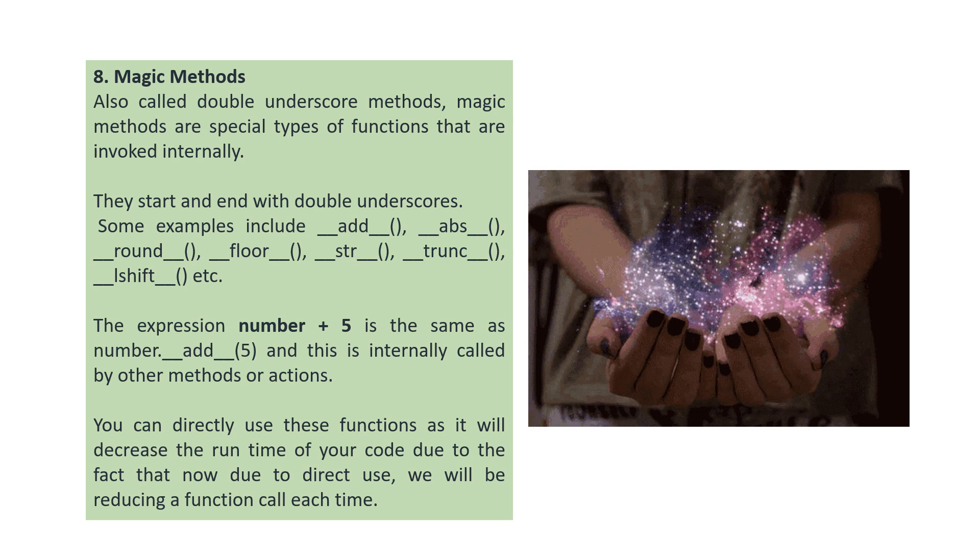The next concept is magic methods. These are also called double underscore methods. Magic methods are special types of functions that are invoked internally. They start and end with double underscores, like double underscore add double underscore. The expression number plus five is same as number dot double underscore add double underscore five. This is internally called by other methods or actions. Instead of writing many lines for computations, we can directly use these methods. It will decrease the runtime of your code due to the fact that direct usage reduces a function call each time.